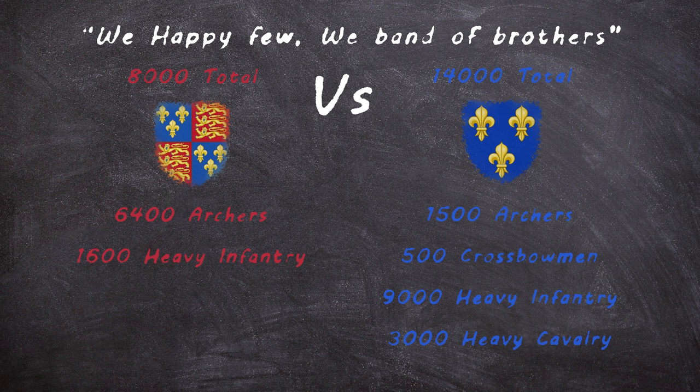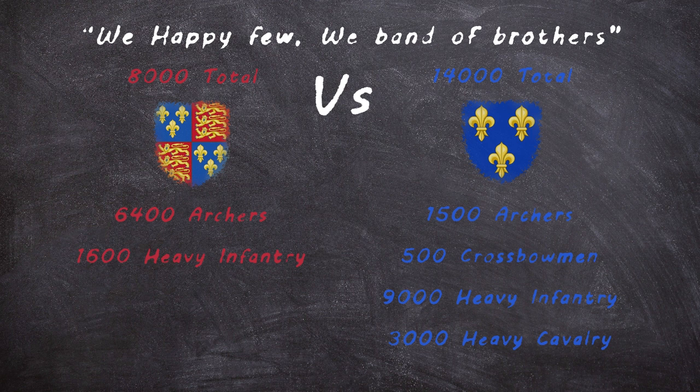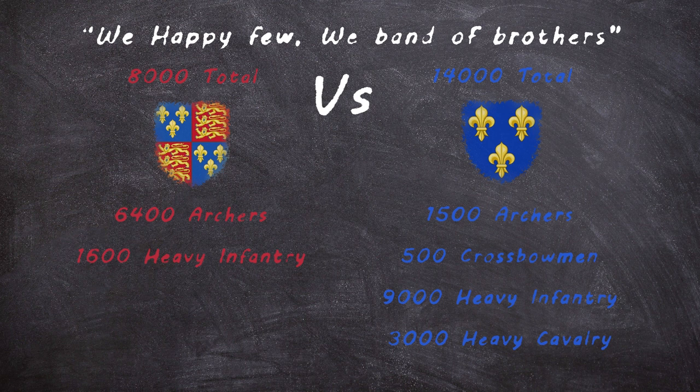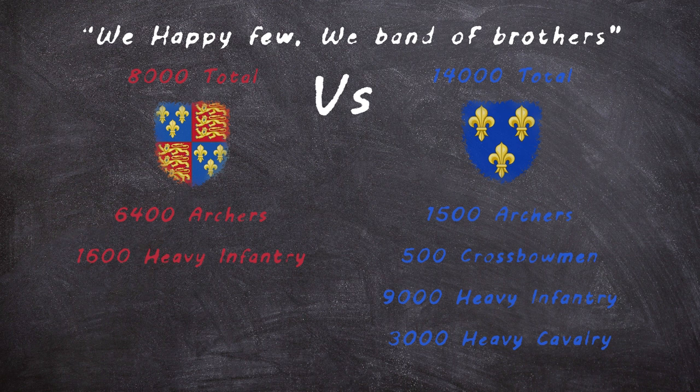Contrasting with the English, the French lines were made up almost entirely of men-at-arms and knights, with only around 1,500 archers and 500 crossbowmen to complement the 9,000 heavy infantry and 3,000 heavy cavalry. The terrain on the battlefield would also make it difficult to deploy any more soldiers in the lines, forcing the French to deploy an equally strangely composed force to the English.